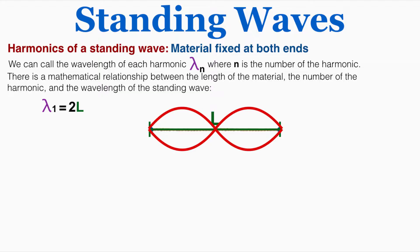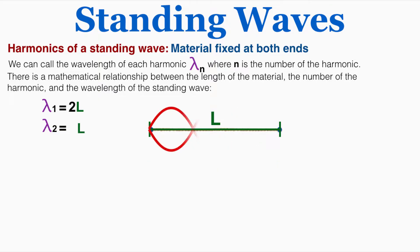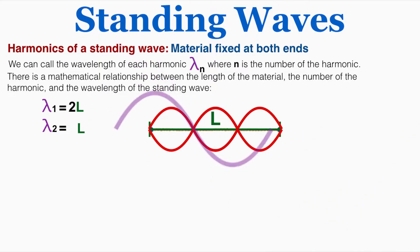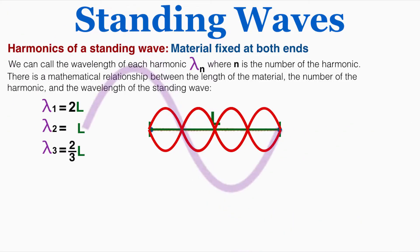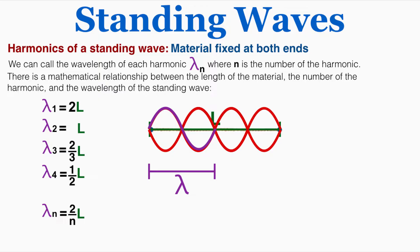In the second harmonic, the wavelength is exactly equal to the length of the material. In the third harmonic, the wavelength is equal to two-thirds of the full material. And in the fourth harmonic, the wavelength is equal to one-half the length of the material. The pattern is that the wavelength of a certain harmonic equals 2 over the harmonic number times the length of the material. This pattern always holds for material fixed at both ends.